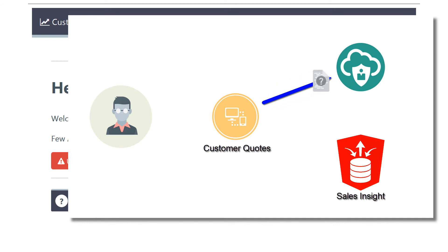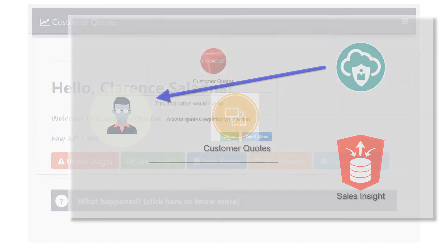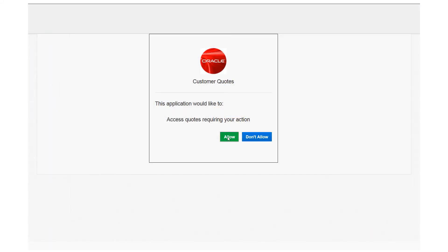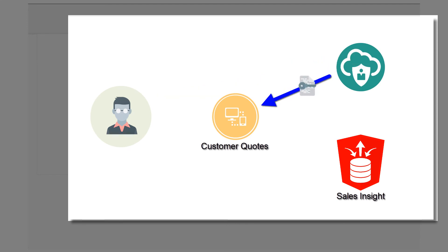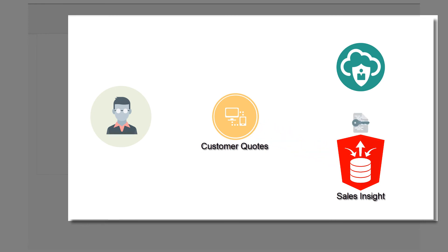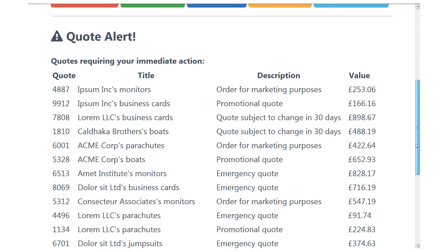Oracle Identity Cloud Service receives an access token request from Customer Quotes to access a Sales Insight REST API on behalf of the resource owner. Oracle Identity Cloud Service presents a consent request to the user — a user can allow Customer Quotes to check their urgent quotes. After allowing consent, Oracle Identity Cloud Service returns an access token that Customer Quotes passes along with the REST call to Sales Insight. Sales Insight validates if the access token is legitimate using a digital signature provided by Oracle Identity Cloud Service, and if it is, returns the quotes to the Customer Quotes application, which displays the results to the user.